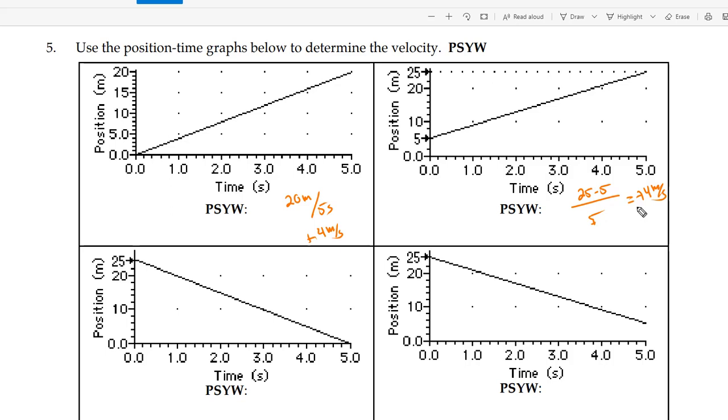So it's the same graph, same slope. It's just a different starting position. Here you're starting at 25 and you end at zero. So zero minus 25 divide by five, you get negative five meters per second.